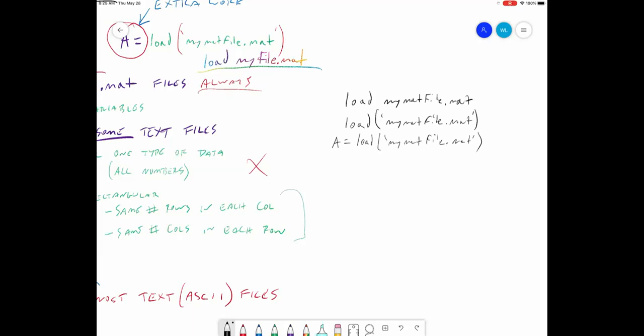This version of the command, instead of reading all the variables into your workspace, is going to read everything into a structure called A. I'll talk about how to read out of the structure when we get to import data. But here you've got extra work to do in order to now read your data. So that's for mat files.